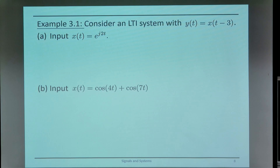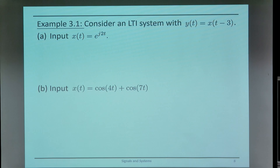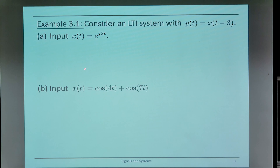Here we have a linear time-invariant system where the output y(t) is equal to x(t-3). Let's look at two possible inputs. One is x(t) = e^(j2t), which is a single complex exponential.